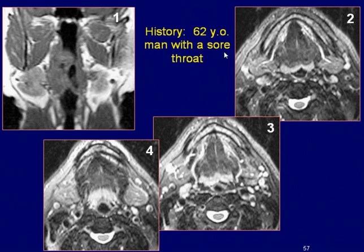This is a 62-year-old man with sore throat. Coronal T1-weighted image of the neck demonstrates a mass lesion deforming and partially occluding the oropharynx. The lesion is extending inferiorly, involving the epiglottis. The axial T2-weighted images reveal the lesion.